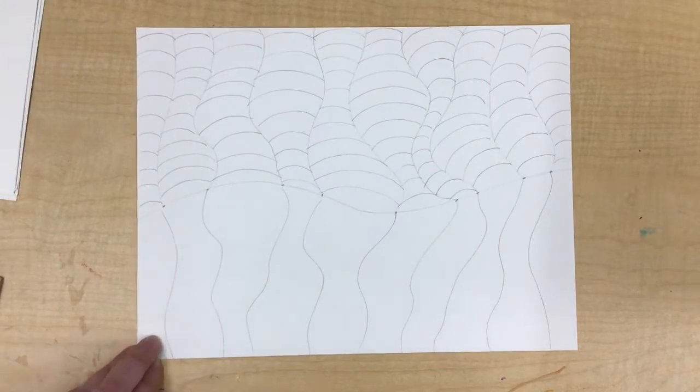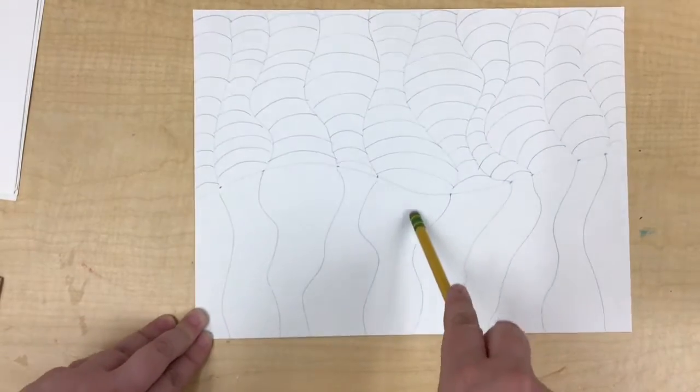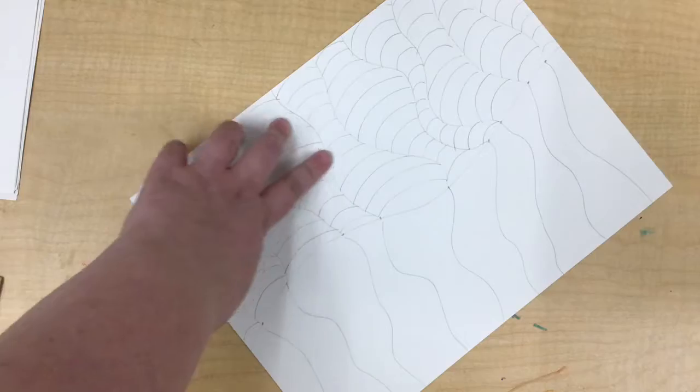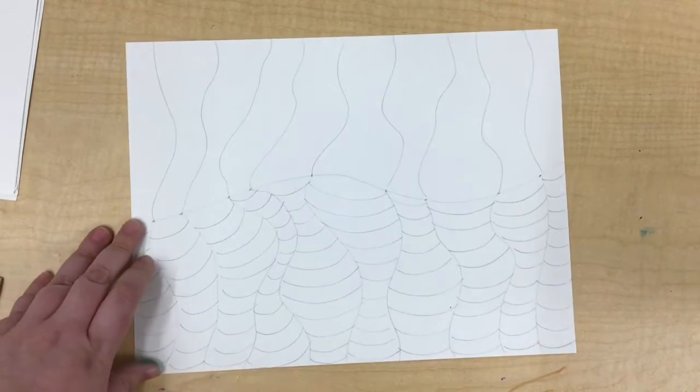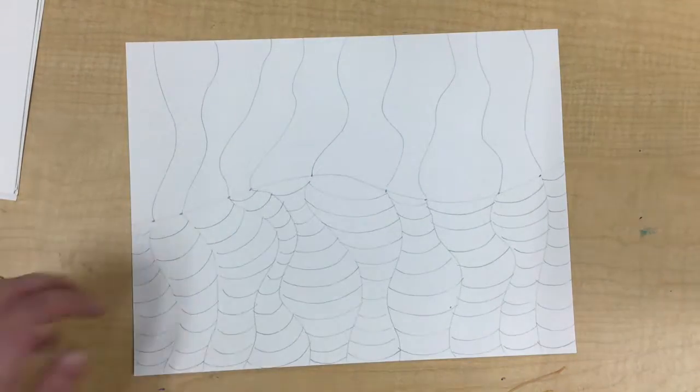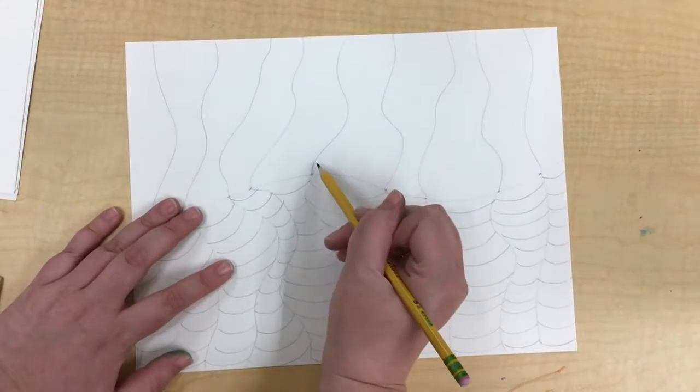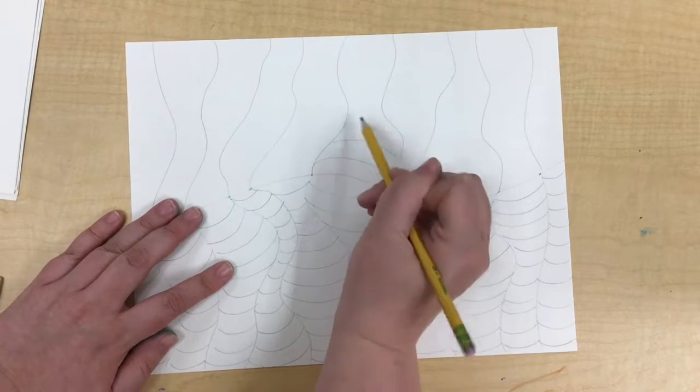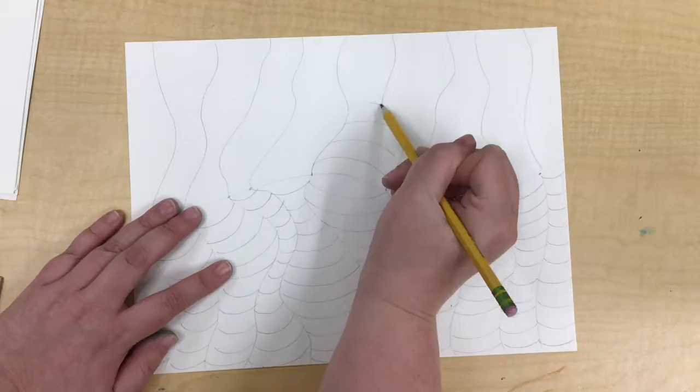I finished one side. Now these lines have to curve the other way and I think it's easier to just take my paper, flip it around. And again I like to start in the middle and I'm just going to curve up again and fill in these spaces.